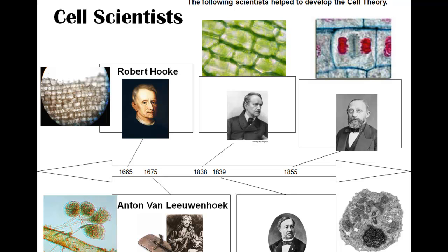Ten years later, Antonie van Leeuwenhoek used a microscope with a small lens. He held a little drop of water on a very thin piece of metal, could move it back and forth and up and down, and he started looking at living cells. So he was the first person to look at living cells.